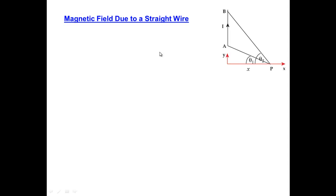One of the more common configurations is a straight wire. Here we see in the picture a straight wire — we don't worry about where the rest of the circuit comes from — but there's current running from point A to point B, oriented along the y-axis. We want to find the magnetic field due to this segment of wire at point P, which is on the x-axis, a distance x away from the origin.